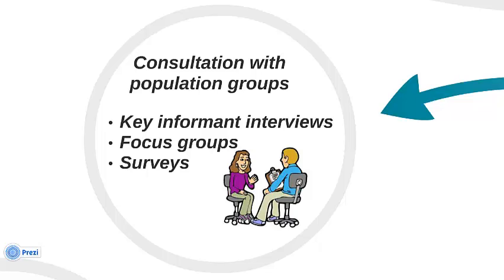A combination of the literature along with consultations with internal staff members and the population groups you've identified will provide you with the information you need to complete the Health Equity Impact Assessment. Sometimes you might not have all the information you need to complete one of the steps, but don't stop there. In the HIA template, make a note that you need more information and keep moving forward with the next step.